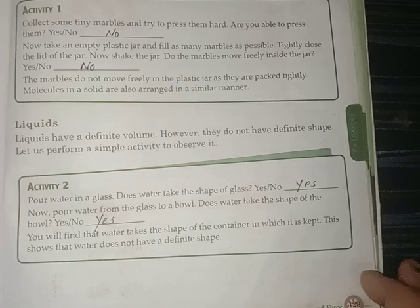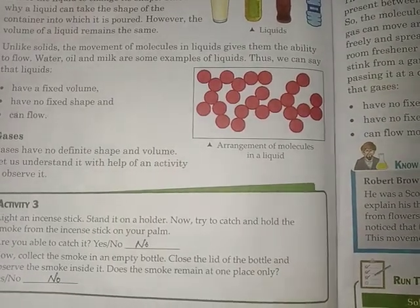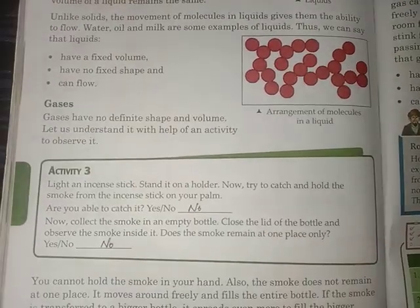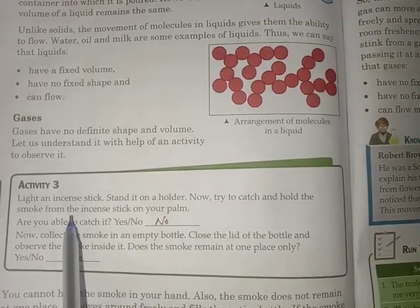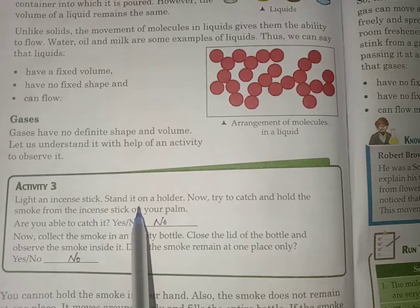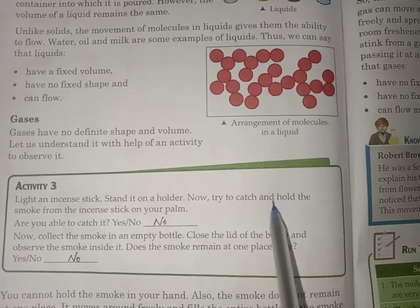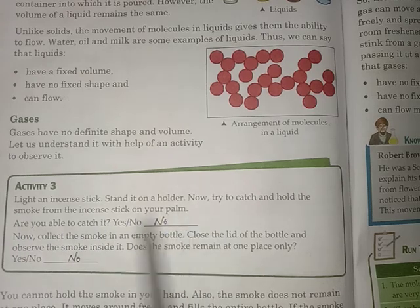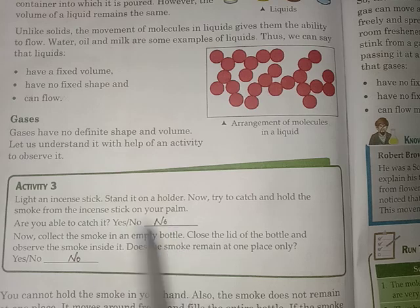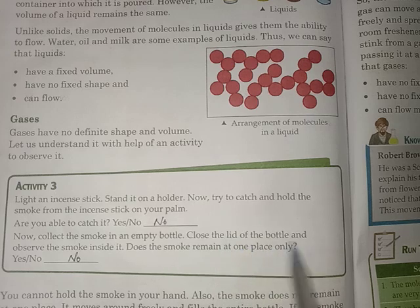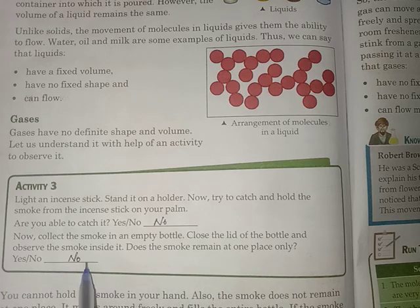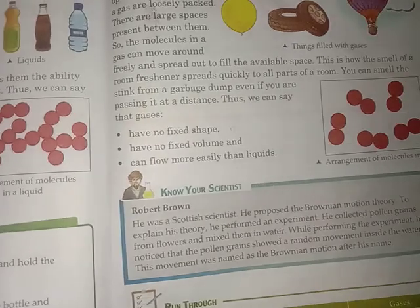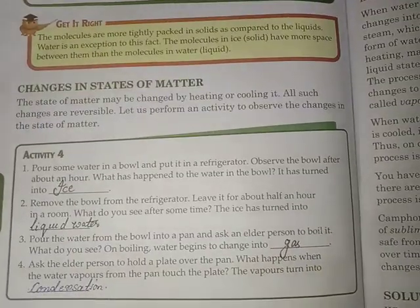Activity three: light an incense stick standing on a holder, then try to catch and hold the smoke from the incense stick on your palm — are you able to catch it? No. Now collect the smoke in an empty bottle, close the lid of the bottle, and observe the smoke inside it. Does the smoke remain at one place only? No.